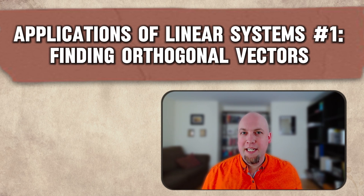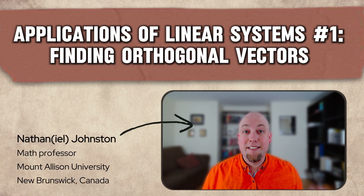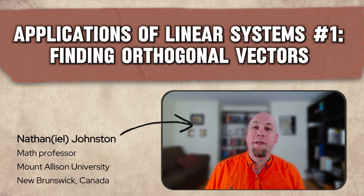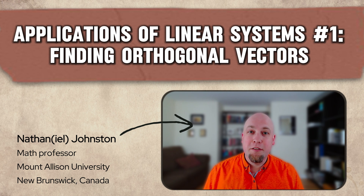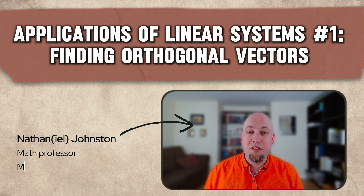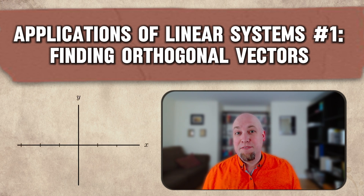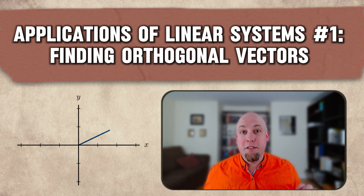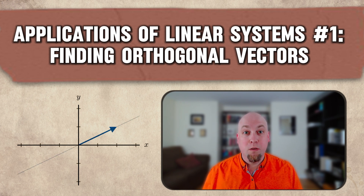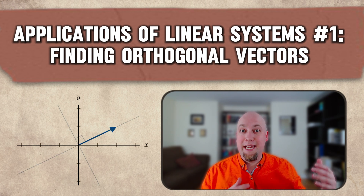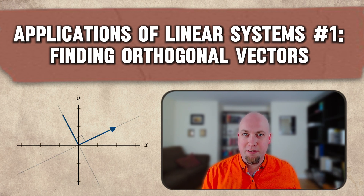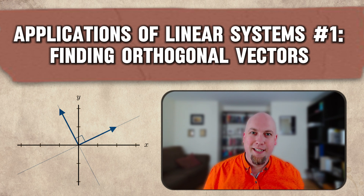Hey, linear algebra folks, my name is Nathan Johnson, and this is going to be the first in a series of videos where we look at how we can use linear systems to solve a variety of problems. In this video, the problem that we're going to start with is using linear systems to find a vector or vectors that are orthogonal to a given set of vectors. Let's get into it.